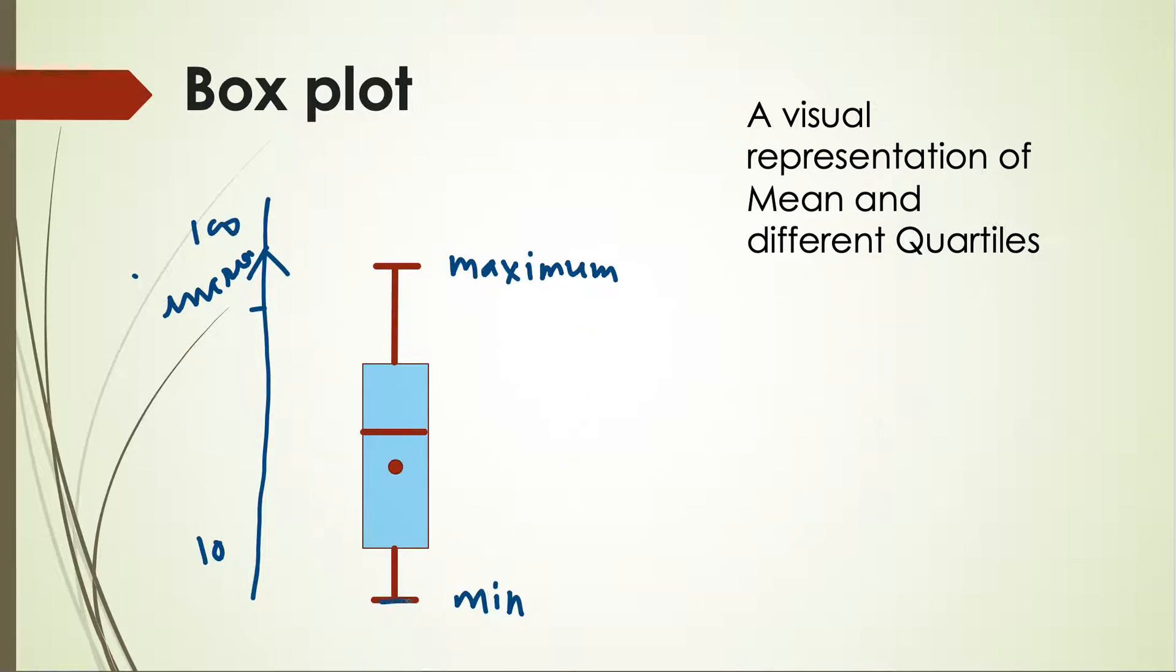So this thing denotes minimum or zeroth quartile, this is fourth quartile, this is first quartile. The bottom of the box, the solid box, this denotes the first quartile, and the top of the box denotes third quartile.